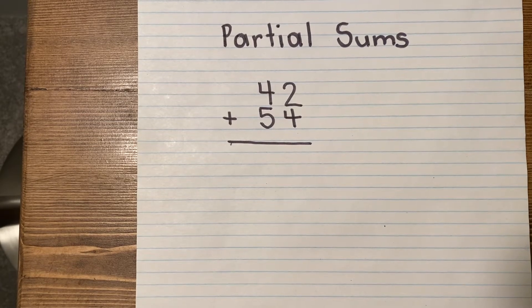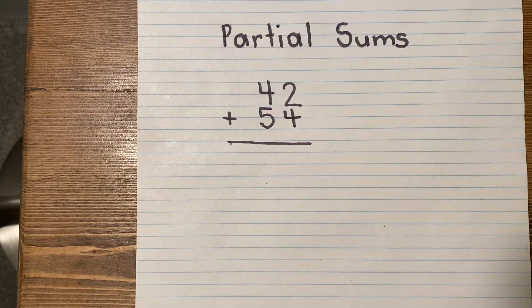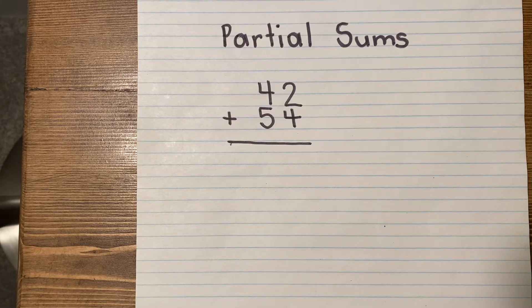Today I'm going to talk about Partial Sums Double-Digit Addition. This is actually a really easy strategy if you are comfortable with your place value, so tens and ones.